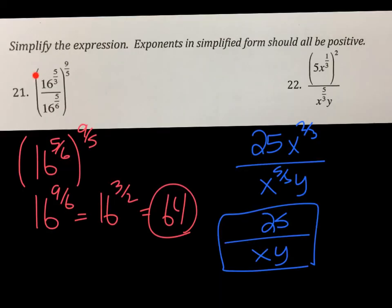21, pretty good one right here. Work inside first. What I did in here is I subtracted the exponents. 5 thirds is really 10 sixths. 10 sixths minus 5 sixths is 5 sixths. I still have the 9 fifths out here. And what I noticed is the 5s cancel. When you raise a power to a power, you multiply. Those 5 cancel. Give me 9 sixths. 9 sixths is really 3 halves. Bottom is the root. Top is the power. The square root of 16 is 4. 4 cubed is 64. 22, I squared the top. 5 squared. If you raise a power to a power, you multiply. That's 2 thirds. I have an x down here. So, I subtract. 5 thirds minus 2 thirds is 3 thirds, which is just 1x on the bottom.